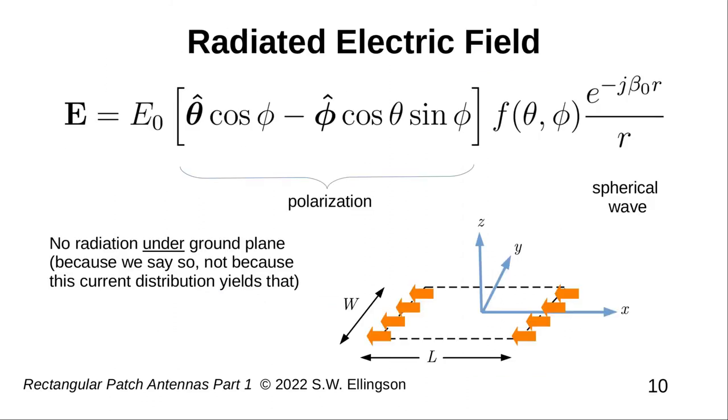Knowledge of this current distribution is sufficient to derive an expression for the radiated electric field. To do this, note simply that the total radiated field is the sum of the fields radiated by the current moments comprising the equivalent currents. I will not do the derivation here, but it does appear in the references that I've mentioned.